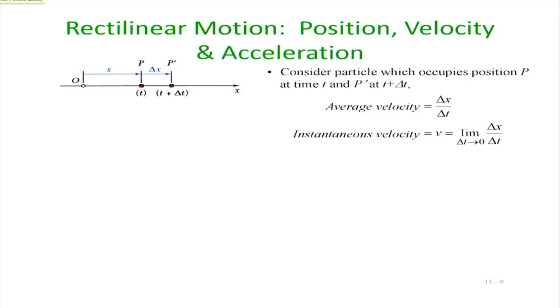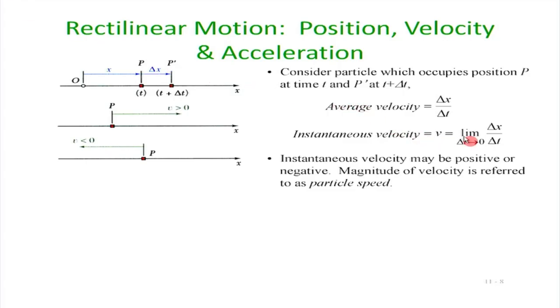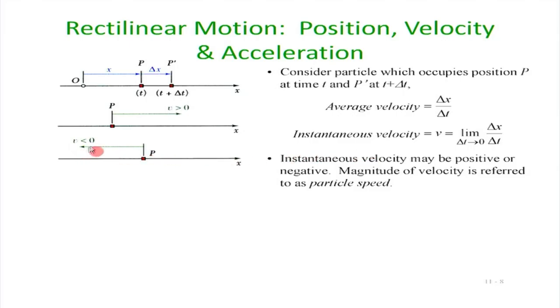Position alone is perfectly fine in principle, but if we want to get something useful we really want to find out the velocity. Velocity is defined using calculus: if in some tiny interval delta-t the particle moves by distance delta-x, then the instantaneous velocity is the limit as delta-t goes to 0 of delta-x over delta-t, which in calculus language becomes dx/dt. Note that velocity is a vector — in rectilinear motion if this quantity is positive the direction is to the right; if negative, the direction is to the left. The absolute magnitude without reference to sign is called the particle speed, which is a scalar quantity.